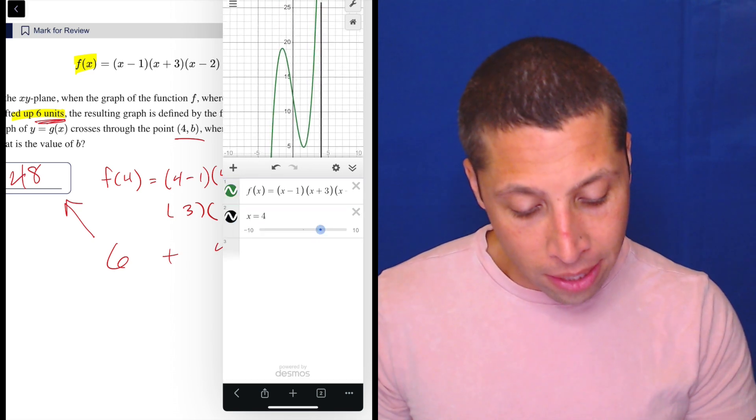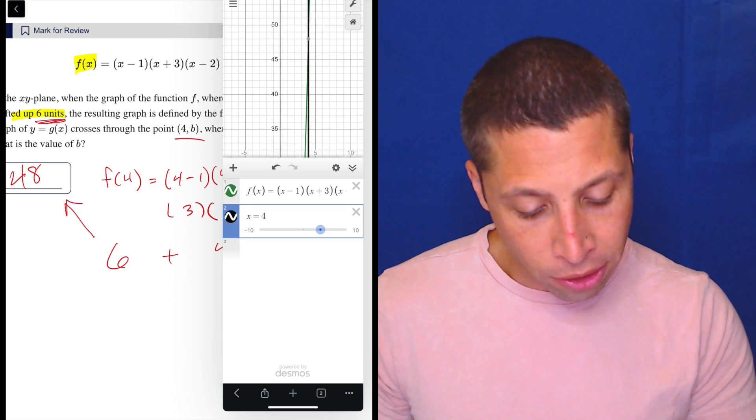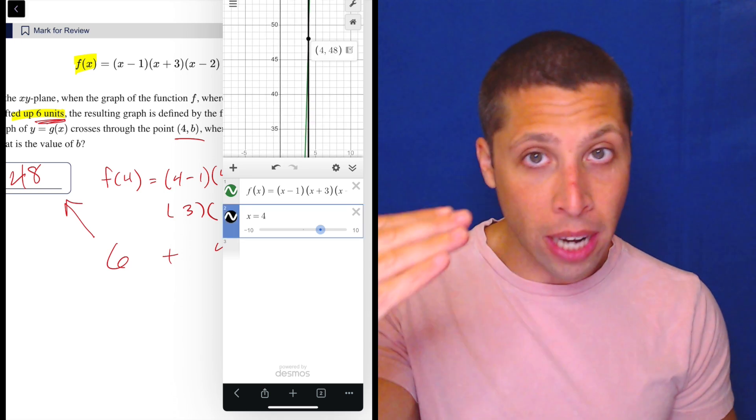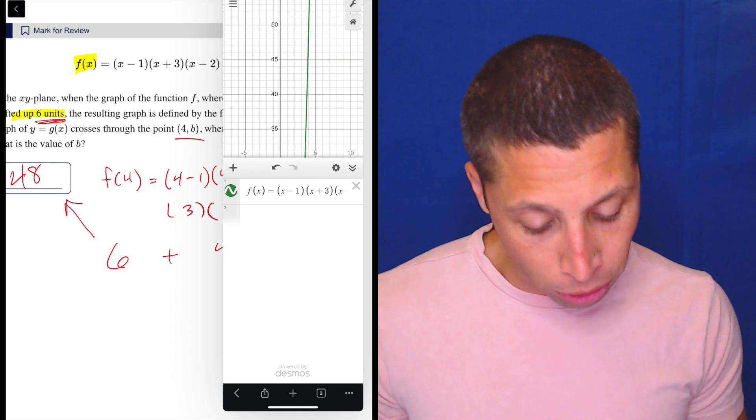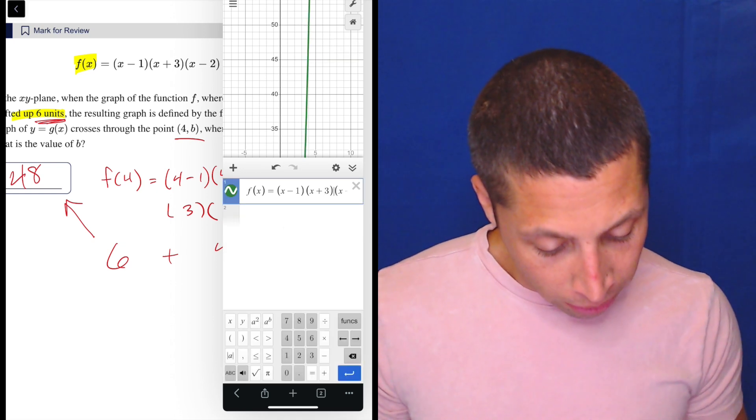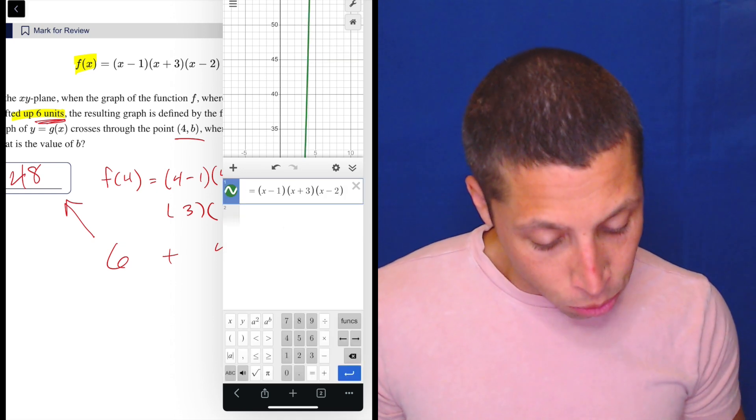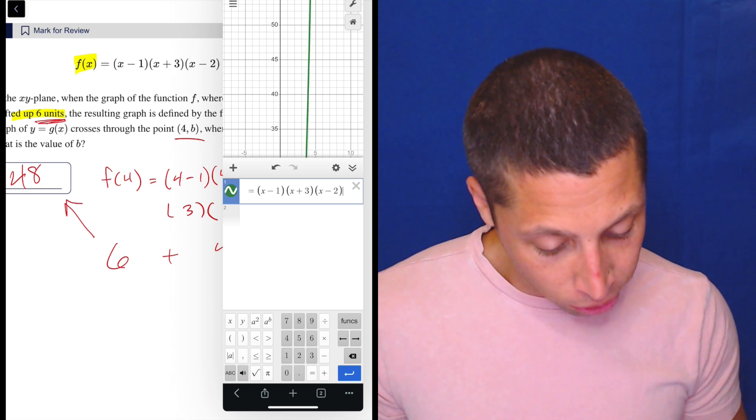Now we have our g(x) and I could rename it that, but I don't want to confuse you too much. So let's do this instead. If x is four, we can see where it intersects. Our graph is now 48 because we moved it up. But technically what I'm doing is kind of breaking the rules of the question. What I should do is I should add the six to a g(x) equation.